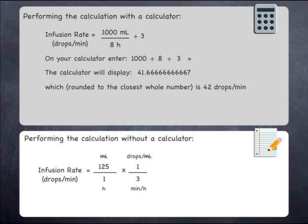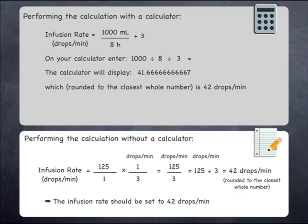The units of mils cancel, and the units of hours cancel, leaving a final unit of drops per minute. Multiplying across gives 125 over 3, which is 125 divided by 3, which is 42 drops per minute when rounded to the closest whole number.